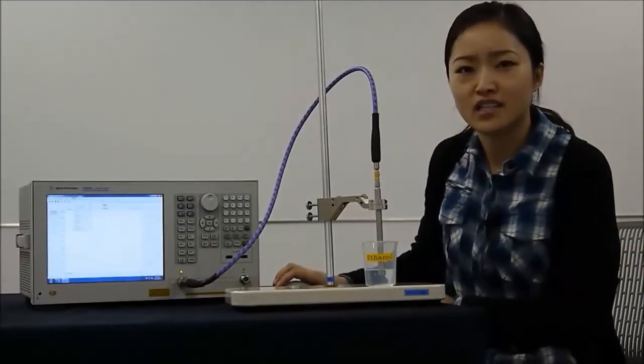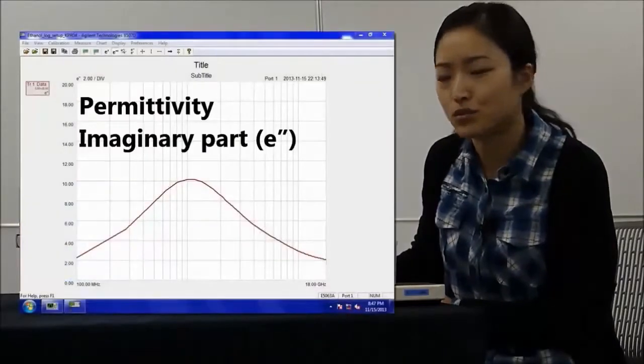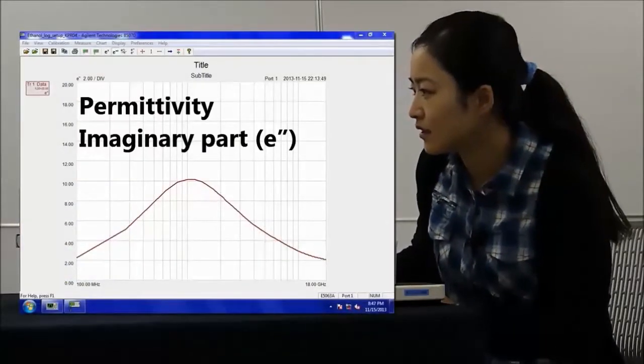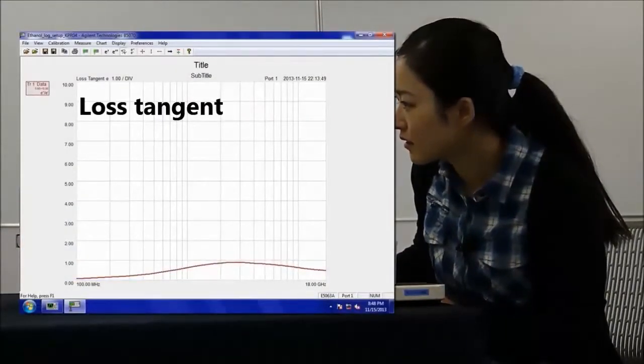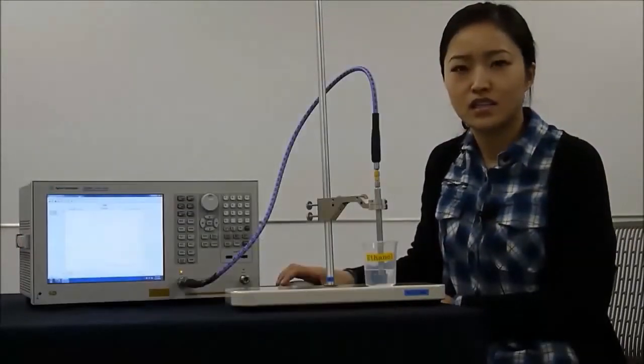Click chart. Now we can look at the imaginary part of permittivity, loss tangent, and Cole-Cole plot.